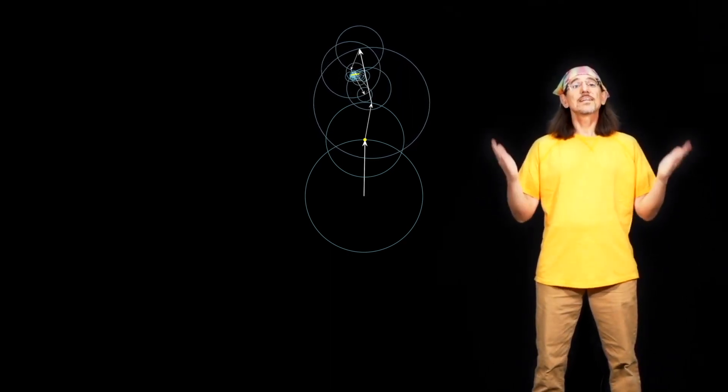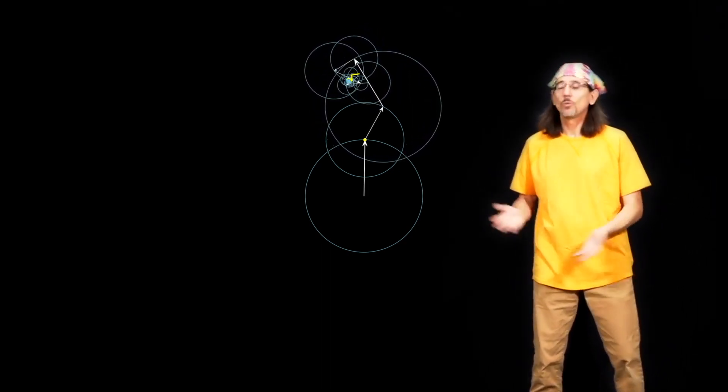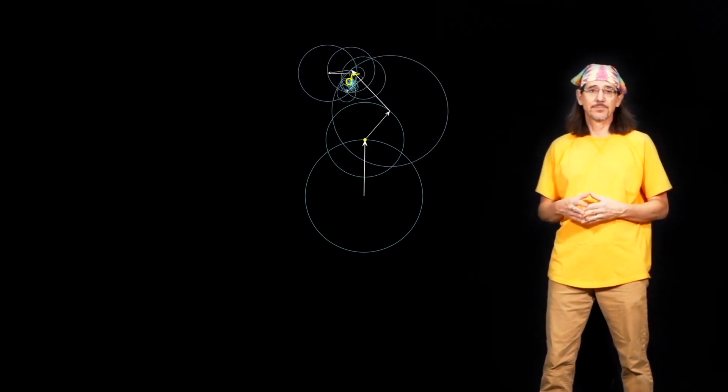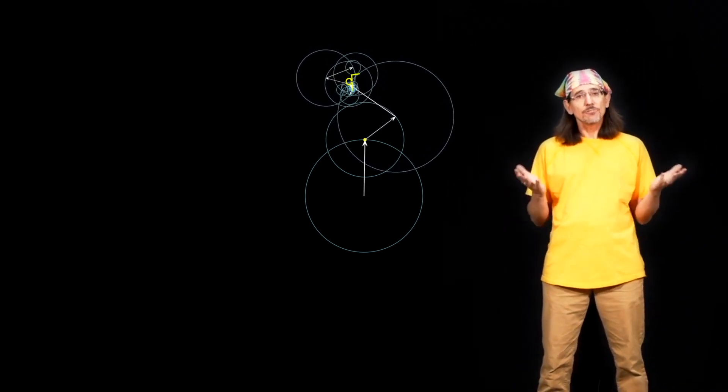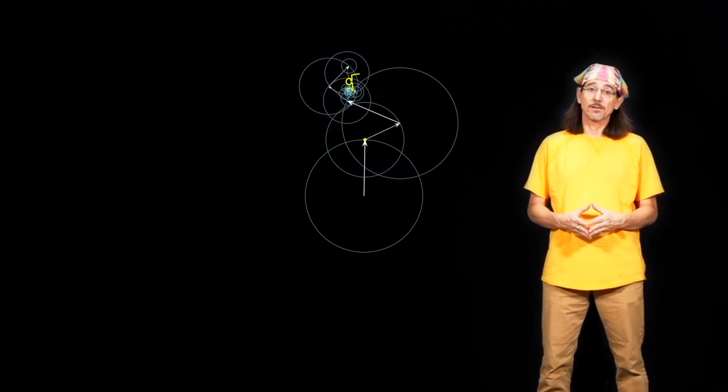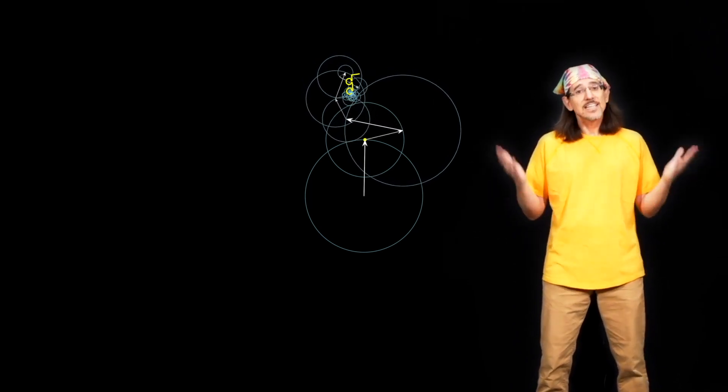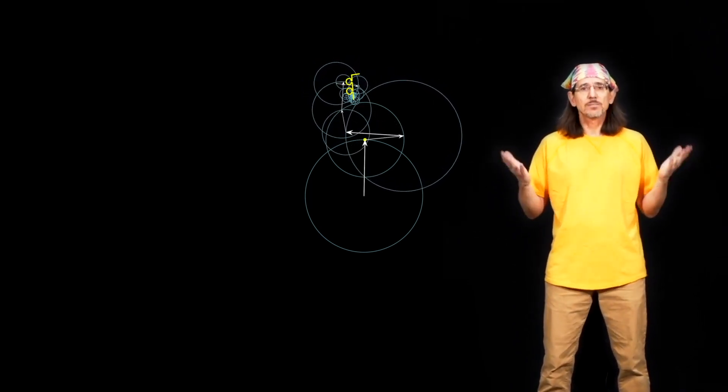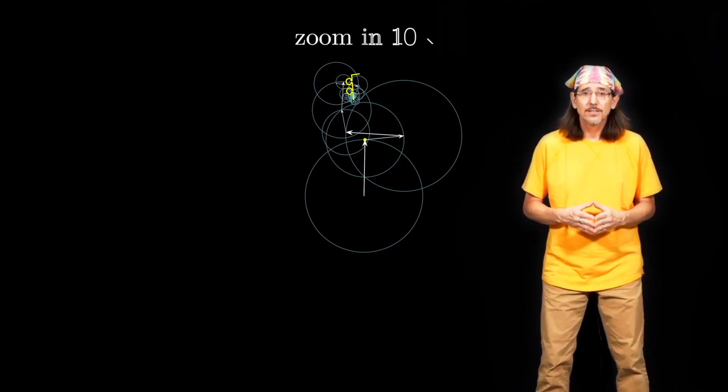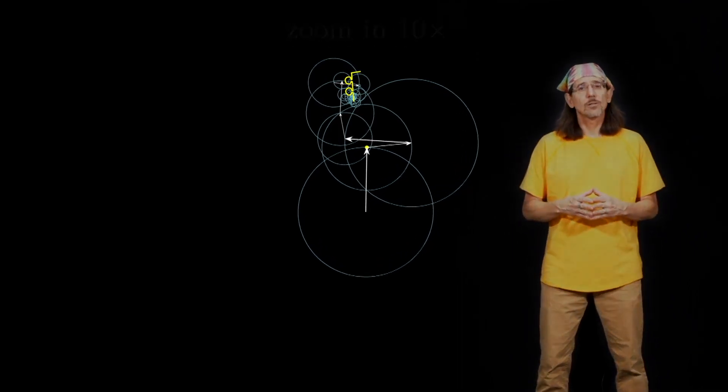We begin at a magnification in which the entire trajectory will ultimately be visible. At this scale, we get a good view of the largest and slowest arrows. Of course, the details of exactly how the trajectory is being drawn can't be seen, so let's zoom in a little to get a closer look.